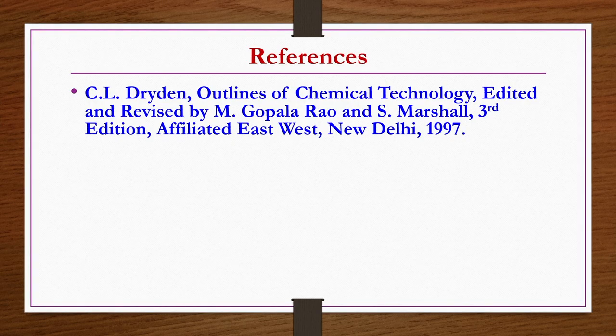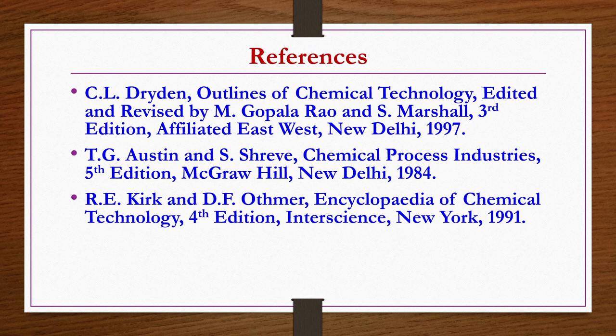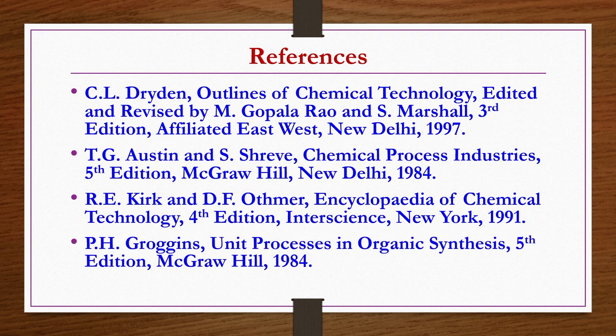The references for today's lecture are: 'Outlines of Chemical Technology' by Dryden, edited by Gopalrao and Marshall, third edition; 'Chemical Process Industries' by Austin and Shreev, fifth edition; 'Encyclopedia of Chemical Technology' by Kirk and Othmer, fourth edition; 'Unit Processes in Organic Synthesis' by Groggins, fifth edition. The majority of details can be found in the first reference book. Thank you.